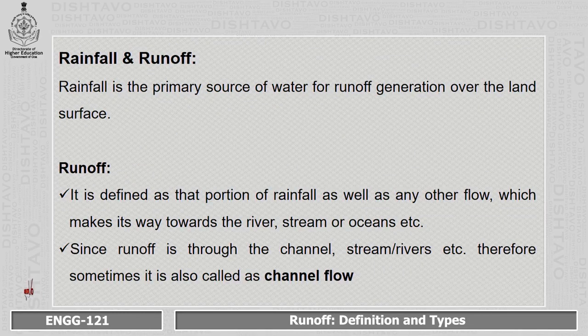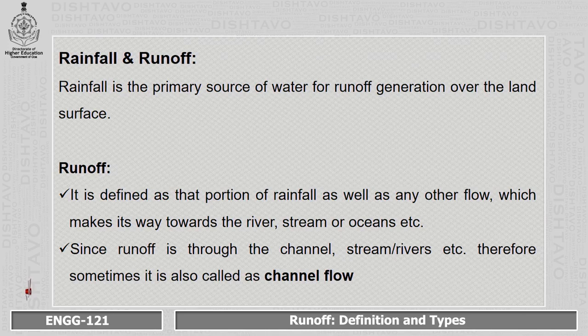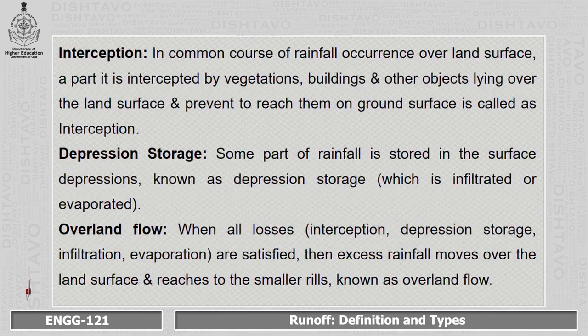What is the relation between rainfall and runoff? Rainfall is the primary source of water for runoff generation. Without rainfall, runoff will not be generated. Runoff is defined as that portion of rainfall as well as any other flow which makes its way towards the river, streams, or oceans. Since runoff flows through channels, streams, or rivers, it is sometimes also called channel flow.